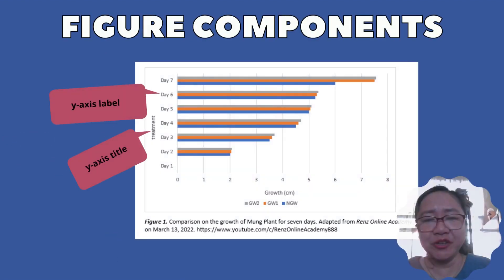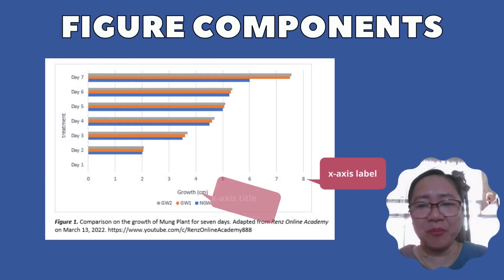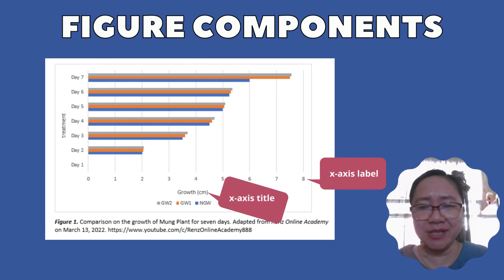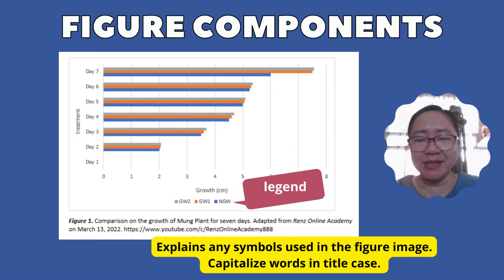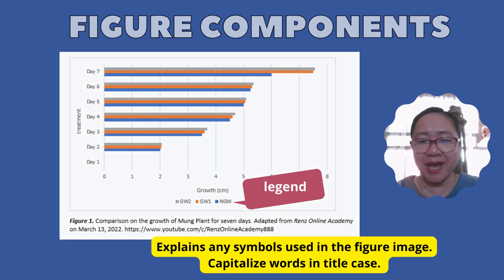Another figure component is the y-axis, which consists of a y-axis label and y-axis title. Another component is the x-axis, which consists of an x-axis title and x-axis label. Another component is the legend, which explains any symbols used in the figure image. Do not forget to capitalize words in title case.